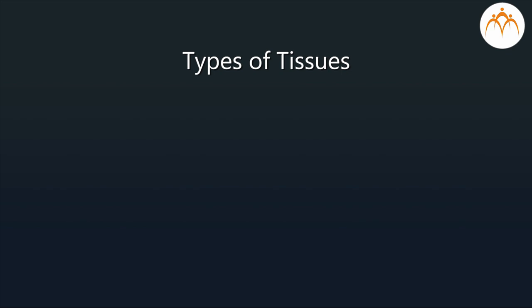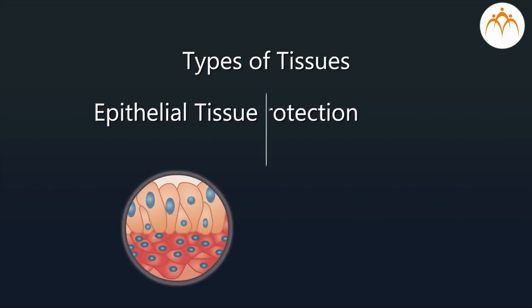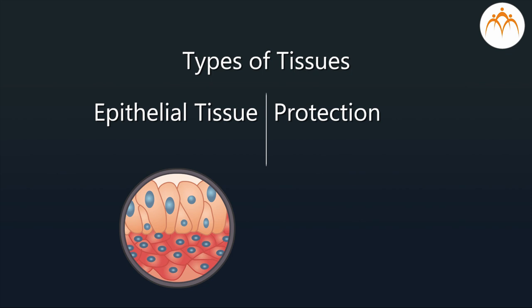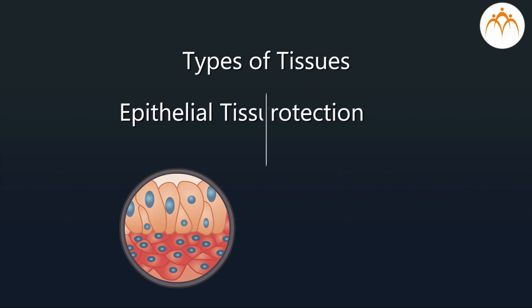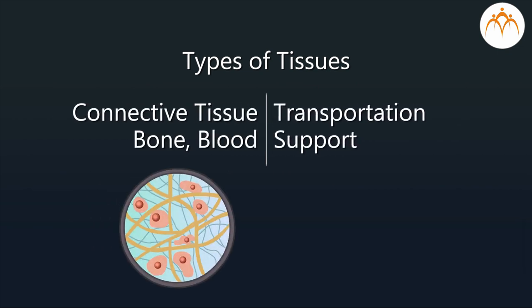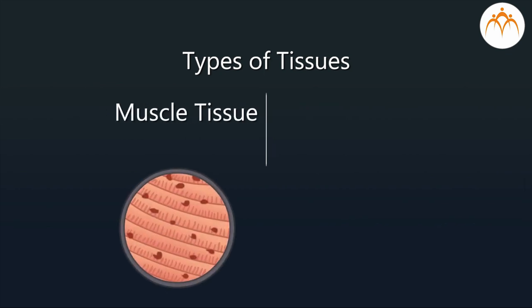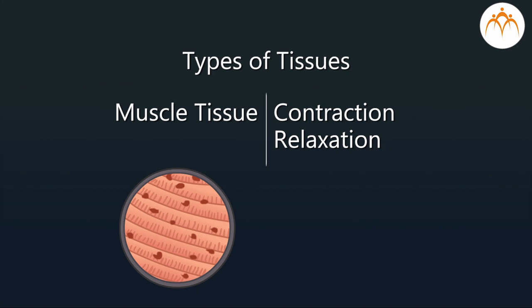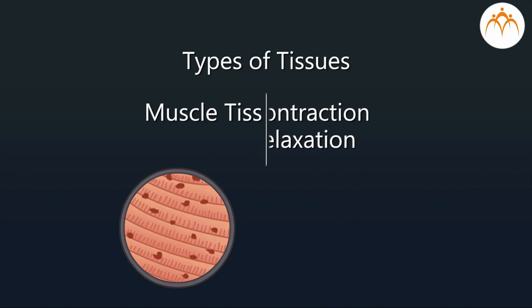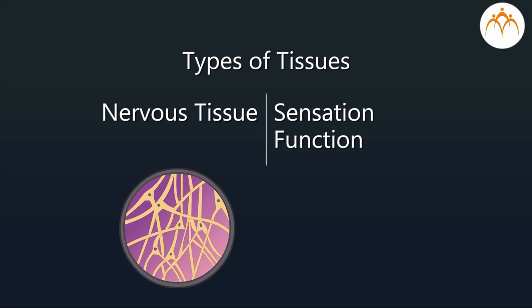The stem cells found in the developing embryo, which are capable of mitotic cell division and differentiation to produce about 220 different types of cells that form various animal tissues, are termed as embryonic stem cells and are pluripotent. The stem cells present in bone marrow, adipose tissue, and blood of the adult human body are termed as adult stem cells. These are capable of cell division and differentiation to produce only very limited types of specialized cells in adult humans, so they are multipotent. They play an important role in the renewal and repair of certain tissues in case of any damage.